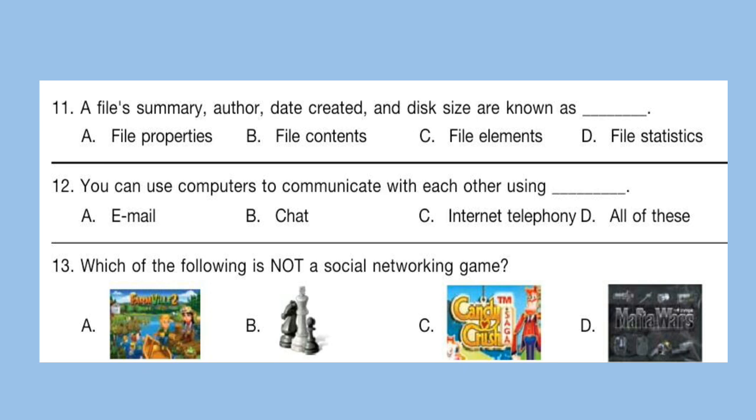Question 11: A file's summary, author, date created, and disk size are known as dash. Options are: A. File properties. B. File contents. C. File elements. D. File statistics. The correct answer is option A — File properties.